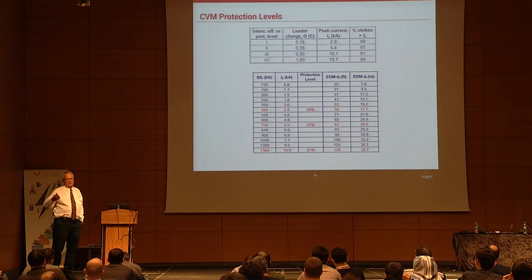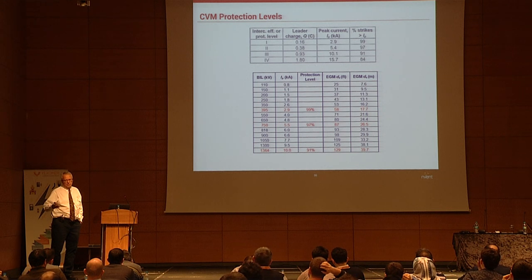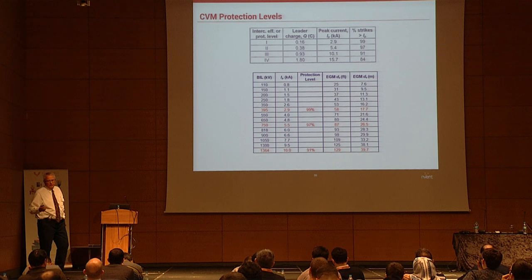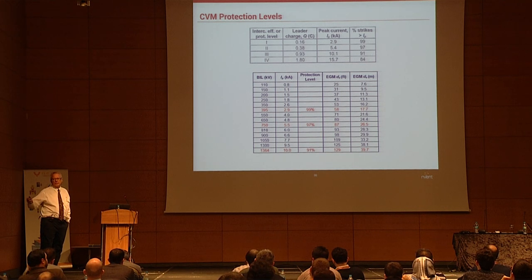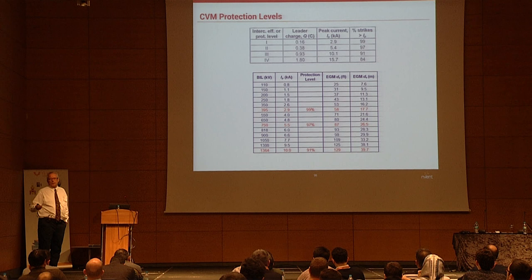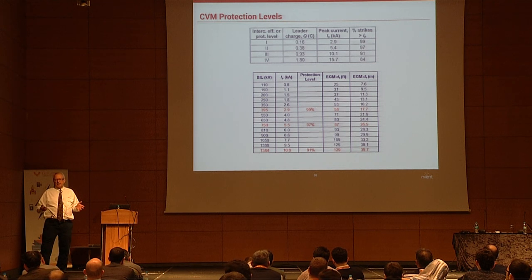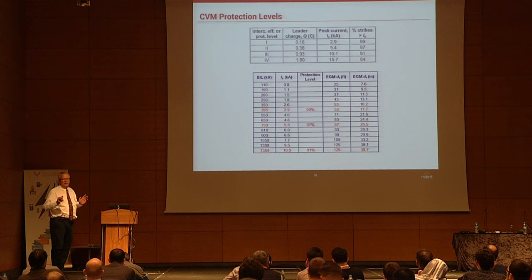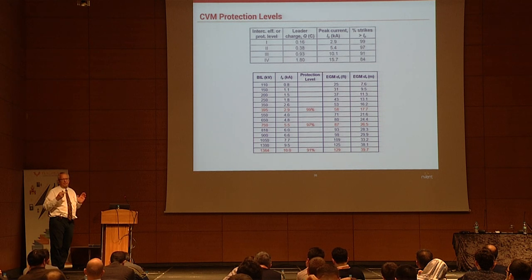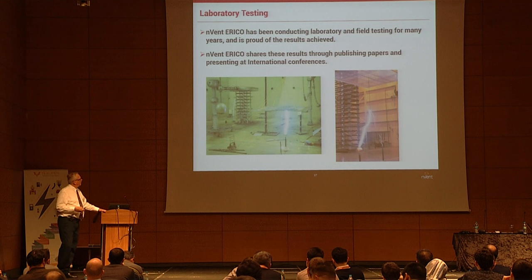In most cases the design engineer or owner chooses the protection level. But in electrical substations, the protection level is dictated by the basic insulation level (BIL) of the equipment. If your equipment can withstand only 3 kA, you must go to the highest protection level. The protection level is not chosen — it is dictated by the BIL of the equipment.